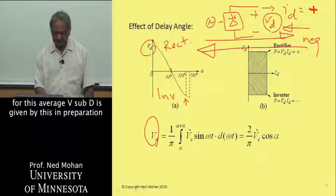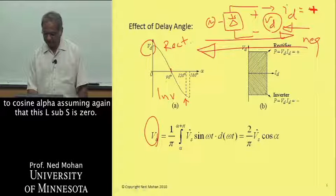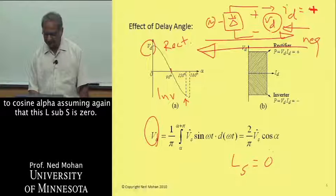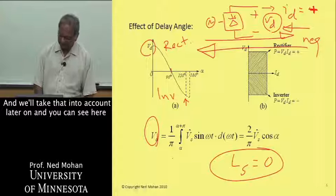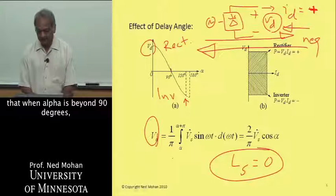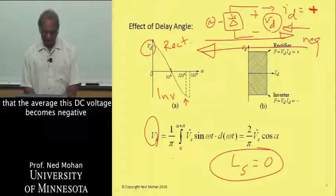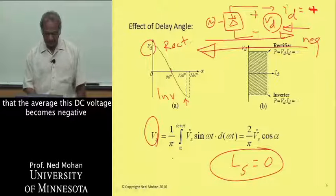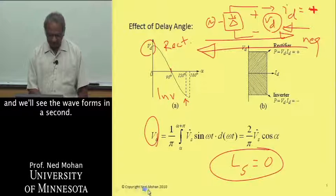The expression for the average V-sub-D is proportional to cosine of alpha, assuming that L-sub-S is 0 — we'll take that into account later. You can see that when alpha is beyond 90 degrees, cosine alpha is negative. So the average DC voltage becomes negative, and we'll see the waveforms in a second.